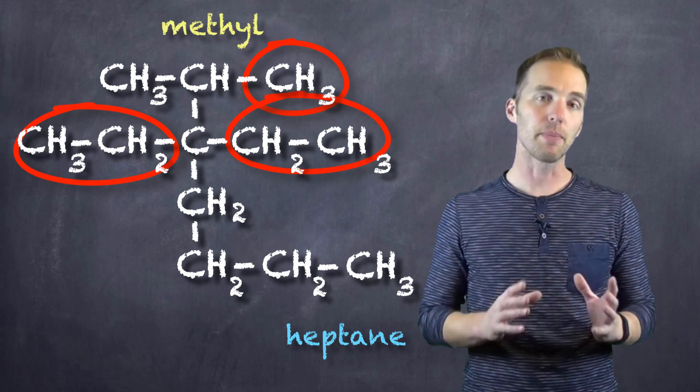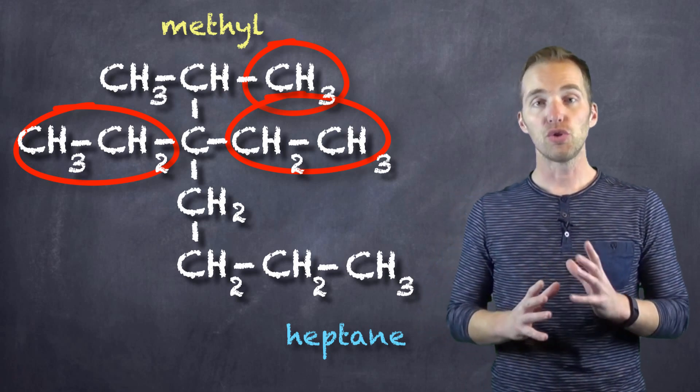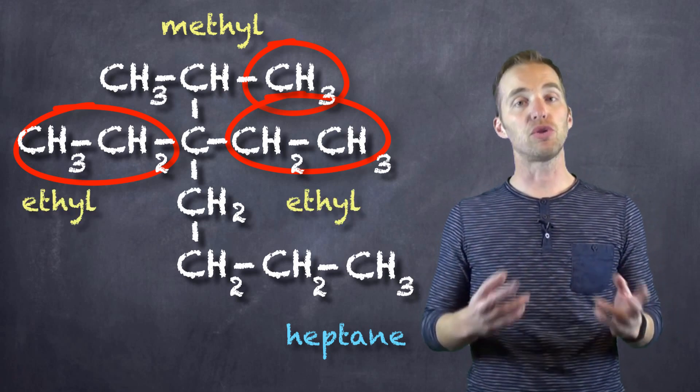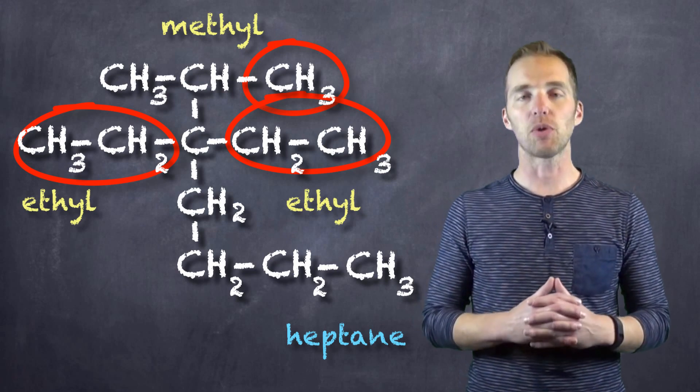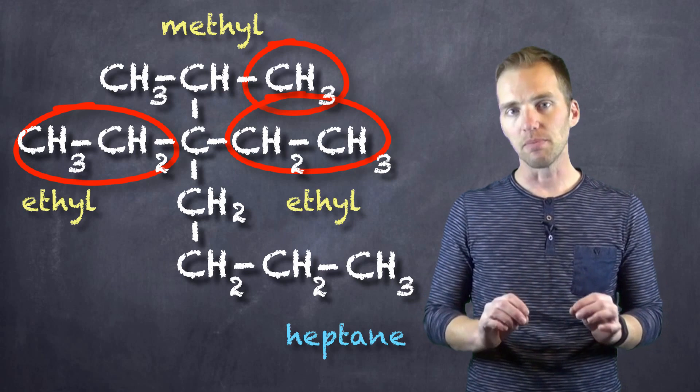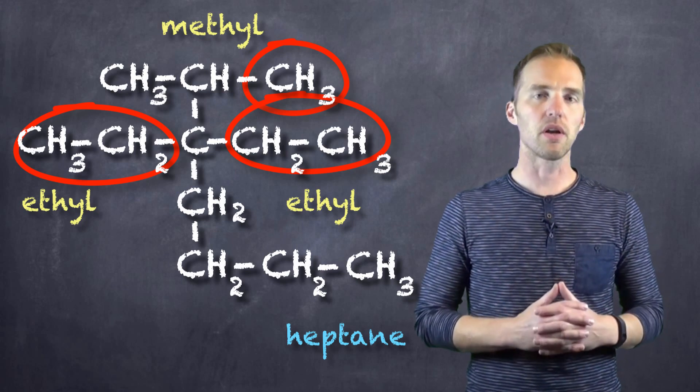We can see that we have also two ethyl groups, because there are two carbons in each one of these branches, actually off of the same carbon. Now the question becomes, when we start numbering this, which end of this molecule do we start numbering from?